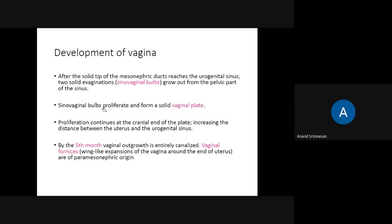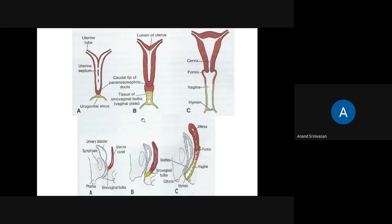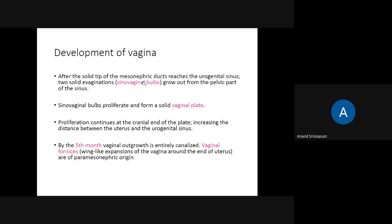The sinovaginal bulb proliferates to form the solid vaginal plate. Proliferation continues, increasing the distance between the uterus and the urogenital sinus.